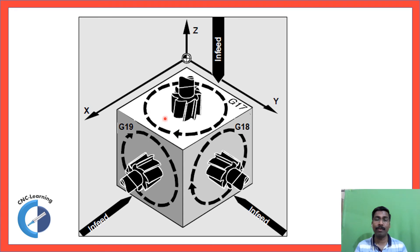And when your infeed axis becomes Y axis, that means your working plane is XZ, then it becomes G18. And when your infeed axis is X, that means you work on YZ, then it becomes G19.